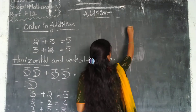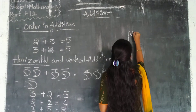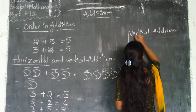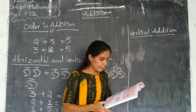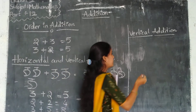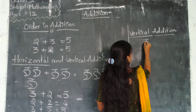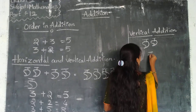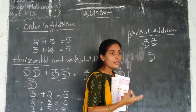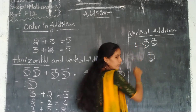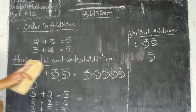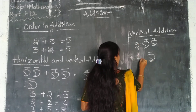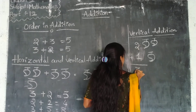The next one is vertical addition. How do we do vertical addition? I have two mangoes, and then I am adding one more mango. How many mangoes are there here? Two. We are adding one mango. So two plus one, total three.